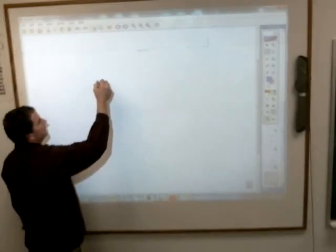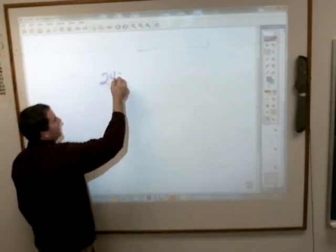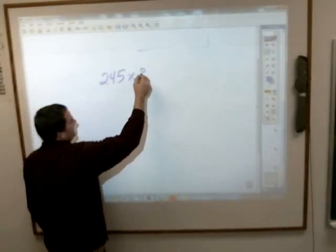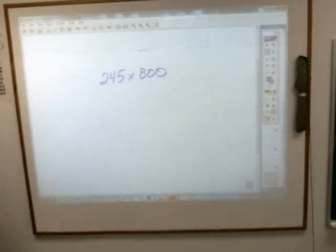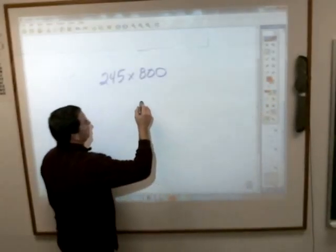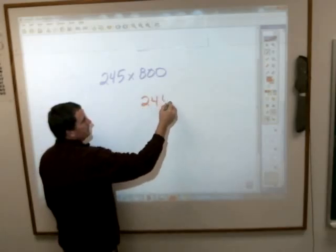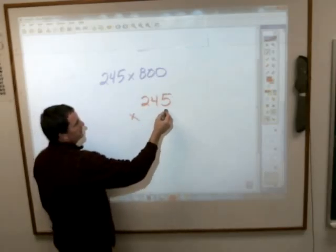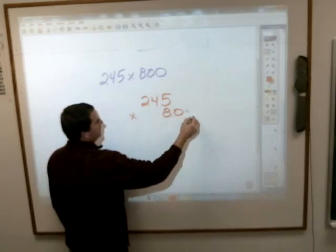So let's say I've got 245 times 800. Now that looks like it's going to be a pretty big problem. In the end it will be, but it's not as hard as it might sound. You just need to take your 245. Where am I going to put the 8? Put it under the 5 and hang out those zeros.